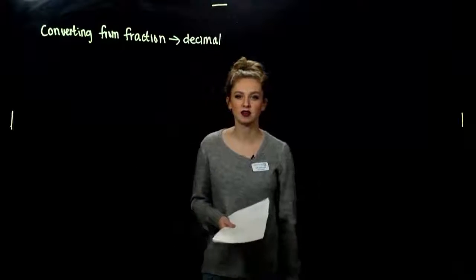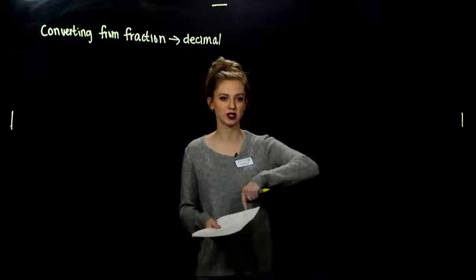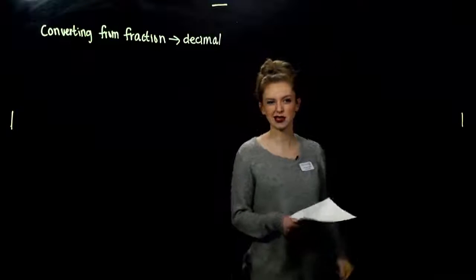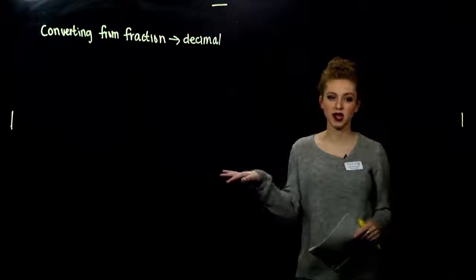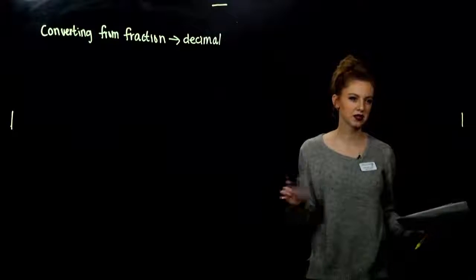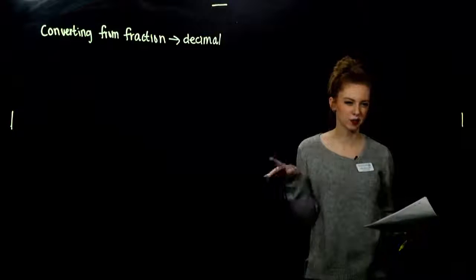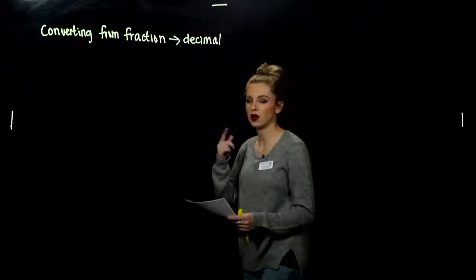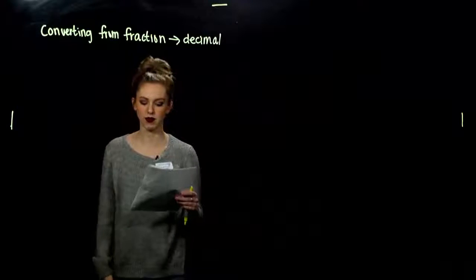The second to last part of this section deals with converting from fraction notation to decimal. When that fraction notation is in that really nice form where we only have factors of 10 in the denominator, it just involves us moving the decimal place that many places. But if I have a different number under there, how do I convert to decimal notation then?